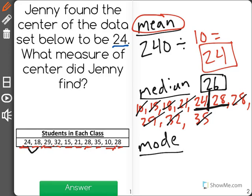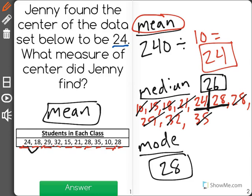Now, the mode is the number that shows up more often than any of the others. And the only number that shows up more than once in our data set is the number 28. So our mean is 24. That would have been the measure of center Jenny found, the median being 26 and the mode being 28, not the measure of center she found.